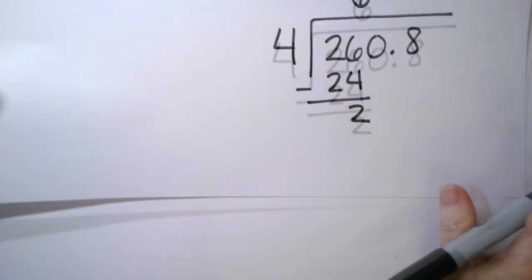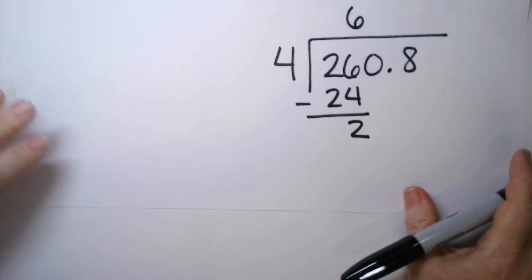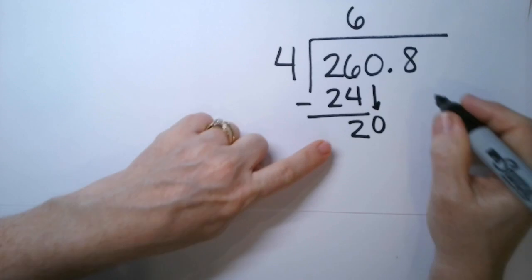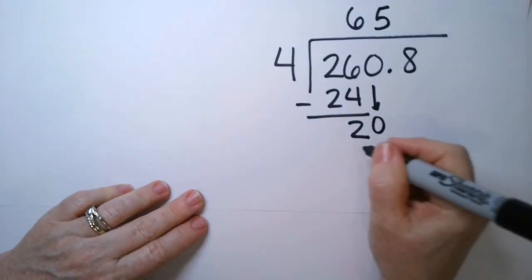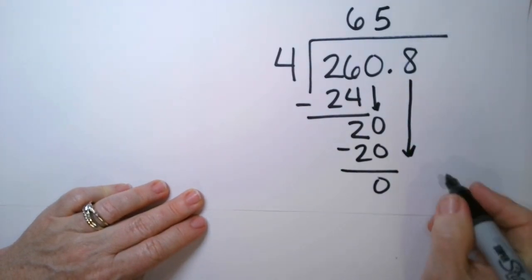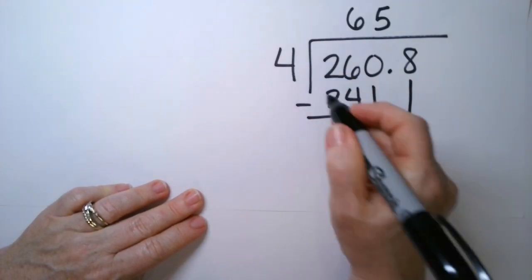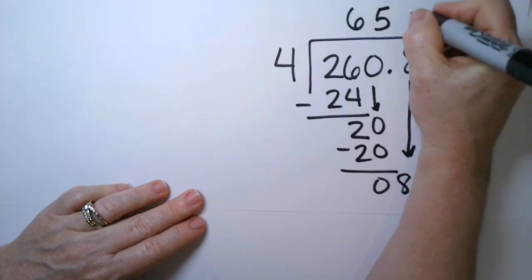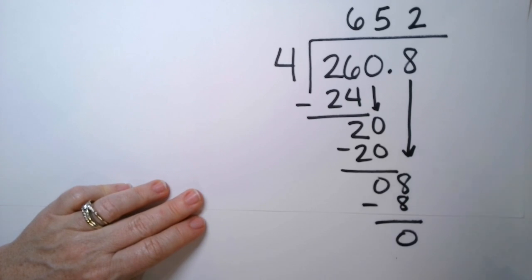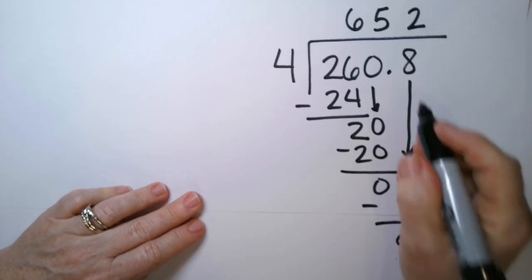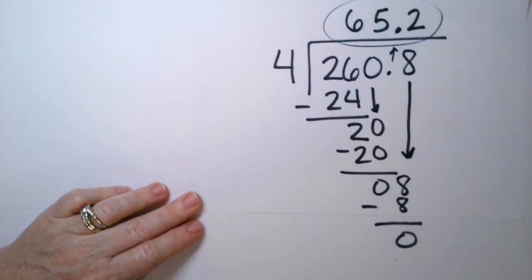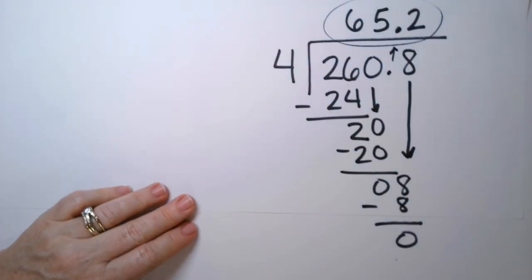Let's go ahead and move this up. We're going to drop that 0 down. 4 goes into 20, 5 times. And it's a perfect match. We have 0, but we still have more numbers to work with. So we're going to drop the 8. 4 goes into 8, 2 times. And it's a perfect match. And we have 0 remainder. Last step, don't forget to push up that decimal point there. And our answer is 65.2.